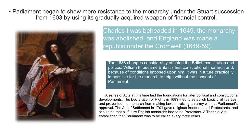William III became Britain's first constitutional monarch, and because of conditions imposed upon him, it was in future practically impossible for the monarch to reign without the consent of Parliament. A series of acts at this time laid the foundation for later political and constitutional developments. The Declaration of Rights in 1689 tried to establish basic civil liberties and prevented the monarch from making laws or raising an army without Parliament's approval. The Act of Settlement in 1701 gave religious freedom to all Protestants and stipulated that all future English monarchs had to be Protestant.